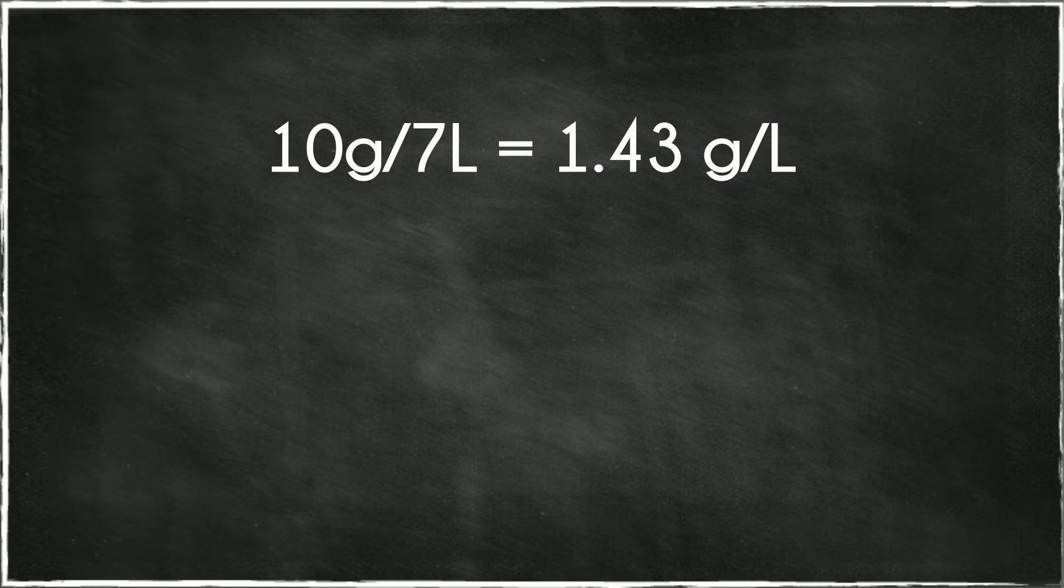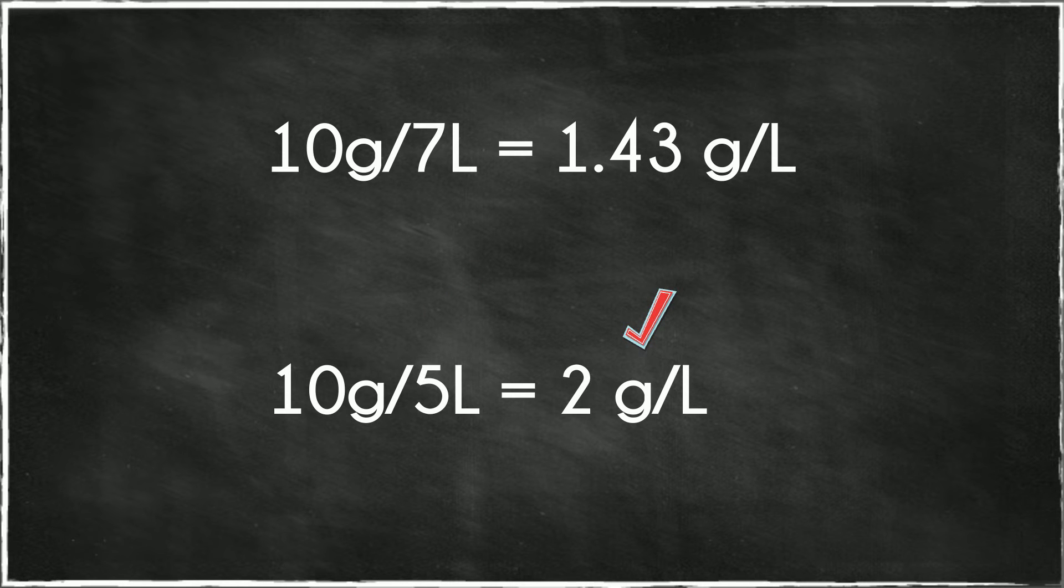For example, you have 10 grams of oxygen gas in a 7 liter container. The density is 1.43 grams per liter. In order to increase the pressure of the gas, the container is now only 5 liters, so the density increases to 2 grams per liter.